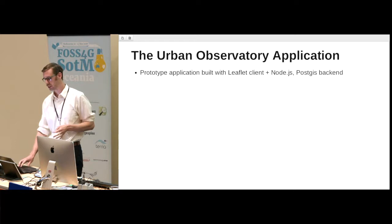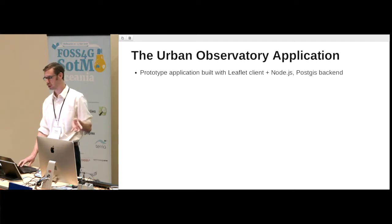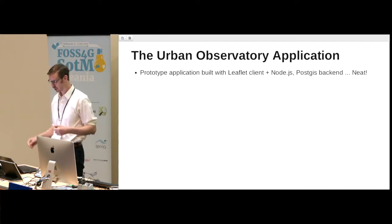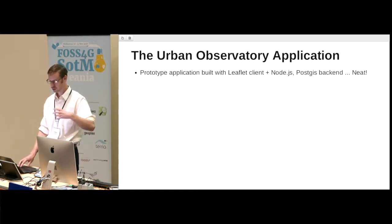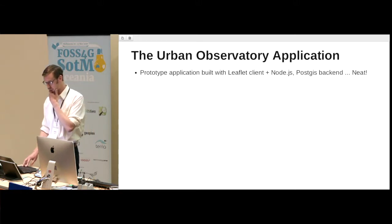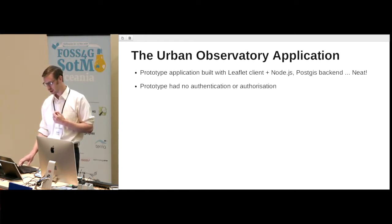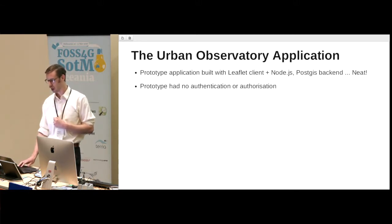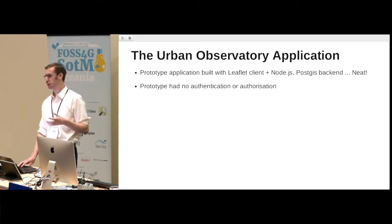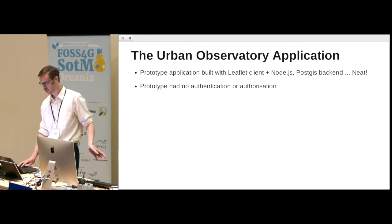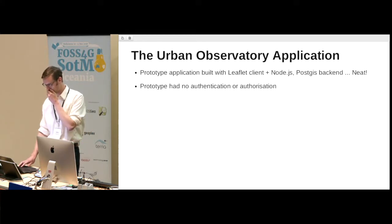The prototype of the application was built as a Leaflet client with a Node.js and PostGIS backend, which was very neat. It demonstrated that the user-level functionality the Centre for Urban Research wanted was achievable. But the prototype had no authentication and no authorization of any kind, and it didn't really have any data management aspect. It was just a matter of shoving everything into Postgres and getting it out as GeoJSON — which is absolutely fine for a prototype.